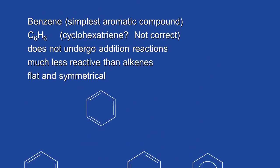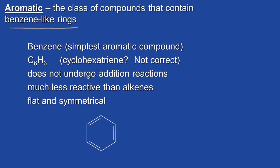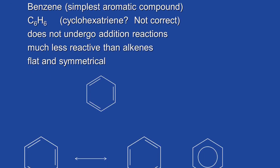Now what we're going to talk about are the aromatic compounds. Aromatic compounds contain benzene-like rings. Benzene is our simplest aromatic compound and it has the formula C6H6. This here would be the structure of benzene.